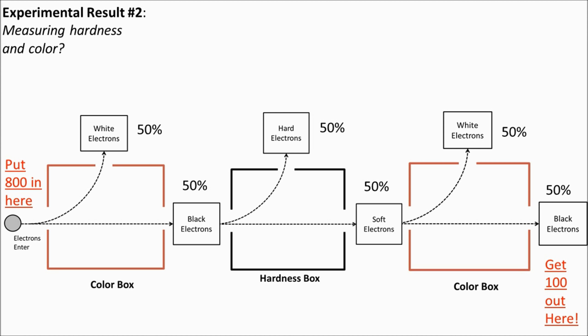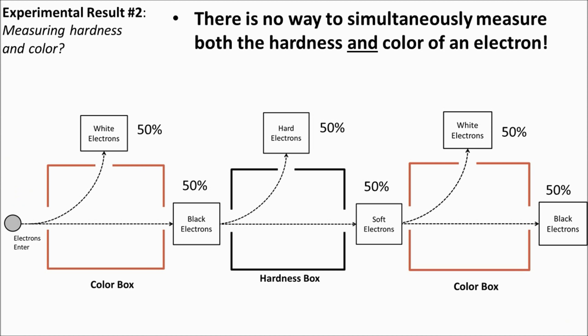So those black electrons actually changed to white electrons. This isn't a problem with the color box — when we check it, it's working properly. What this is getting at is the fundamental principle called the Heisenberg uncertainty principle. This experiment shows that we cannot measure both the hardness and the color of an electron. It doesn't even mean anything to say an electron is both white and hard or black and soft. As soon as we measure color, it's 50-50 whether the electron will be hard or soft, and vice versa.